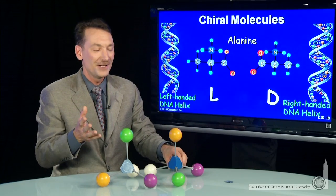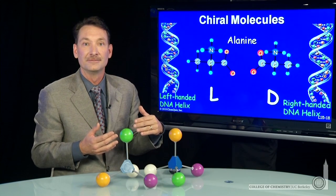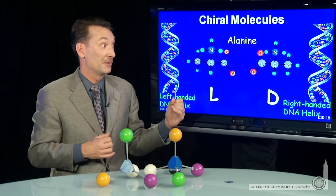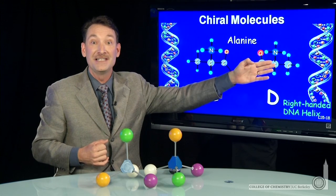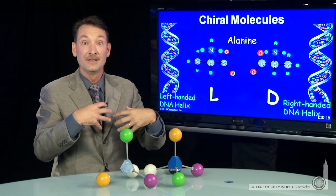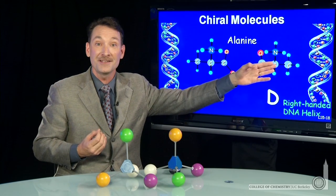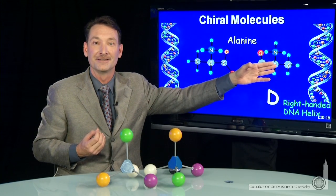This handedness is interesting — it appears in your body. You might say, well, if these molecules are so similar, how does your body know that it needs only L? In fact, if you were to feed a person all D amino acids, it would be protein, you could eat it, but you would actually die because your body can't process the other-handedness.